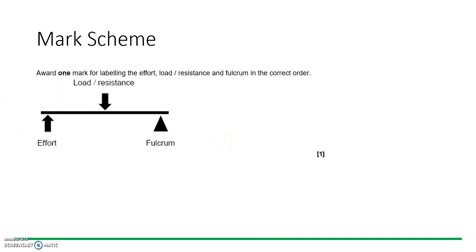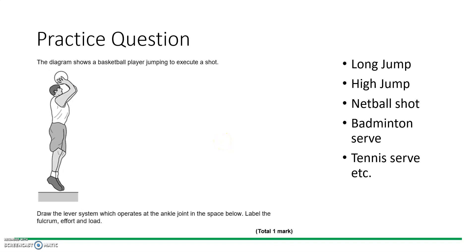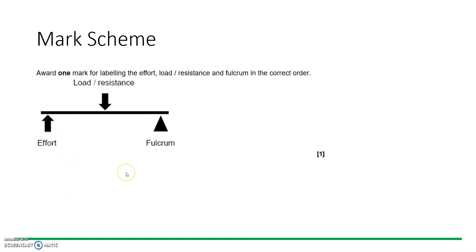Albeit this is not the same orientation as the diagram here, the principle is still the same. It's still a second class lever and it doesn't matter whether you put the fulcrum on the right or left hand of the diagram, as long as they are in the same orientation with the load in the middle and it's a second class lever, you will get the mark. Again, they're labeled.